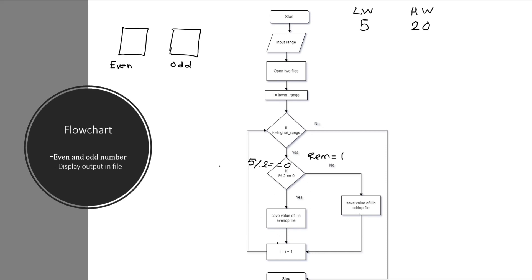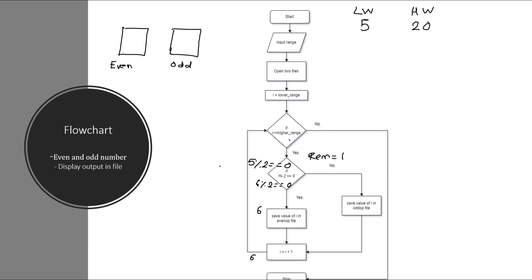Then we move to the next number using i = i + 1, making i equal to 6. We check whether 6 modulus 2 equals 0 — the remainder is 0, so this condition is true and 6 gets saved into the file where we store all even numbers. This process repeats until we reach the higher range, which in our case is 20. Since 20 is even, it gets stored in the even numbers file.